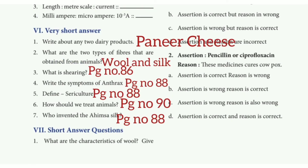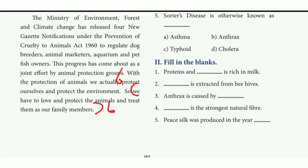Fifth question: how should we treat animals? Refer to page number 90. The last three lines of the page — starting from the last third line — carry the full mark. The key phrase is 'family members.'